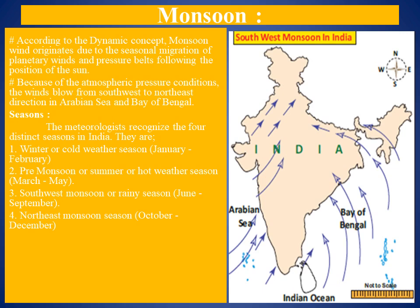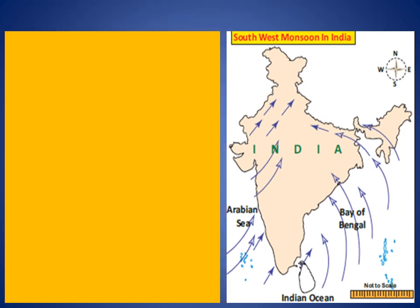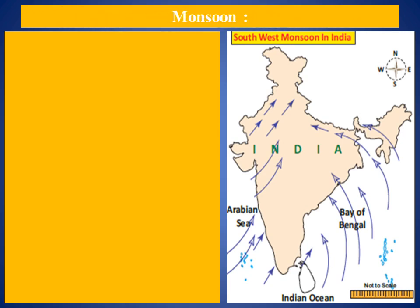The first main heading is the winter or cold weather season. During this period, the vertical rays of the sun fall over the Tropic of Capricorn, which is far away from India. Hence, India receives slanting sun rays, which results in low temperature. The cold weather season is characterized by clear skies, fine weather, light northerly winds, low humidity, and large daytime variations of temperature.